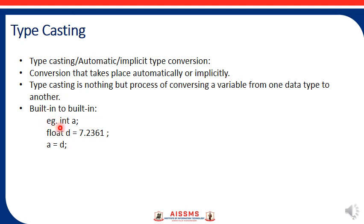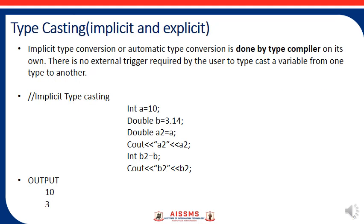Here you can see examples: integer, float, double, character, string — all these are primitive or built-in data types. We have an integer variable 'a' and a float variable 'd', where d is assigned 7.2361. When we say a is equal to d, that means the float data type is being converted into the integer data type.